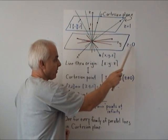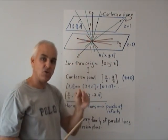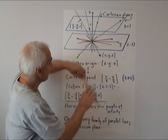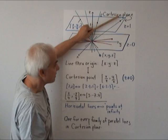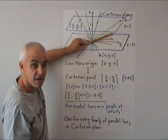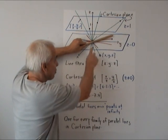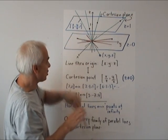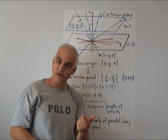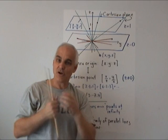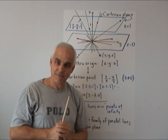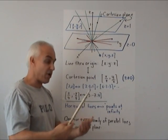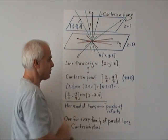They're the ones where z equals zero, and they correspond exactly to directions in the Cartesian plane. In other words, for every family of parallel lines up here, there's a corresponding unique line which is horizontal through the origin. So the lines through the origin which are horizontal correspond in this picture to points at infinity in the Cartesian plane.